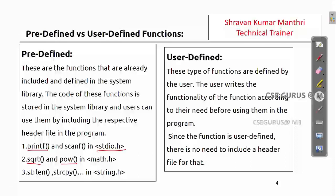Now, user-defined functions — as a user, you write the functions according to your need. For example, we defined how to get the factorial of a number. The 'fact' function is one that the user defined, that's why it is called a user-defined function.